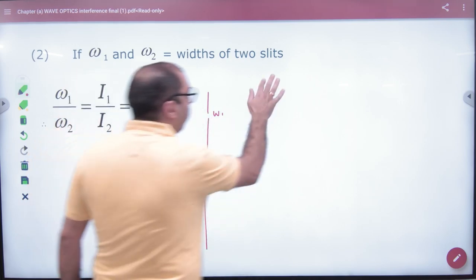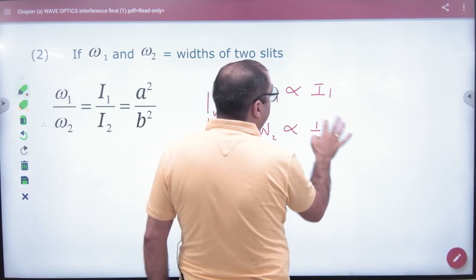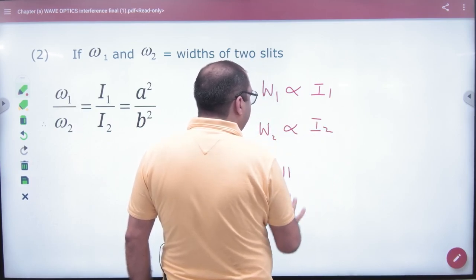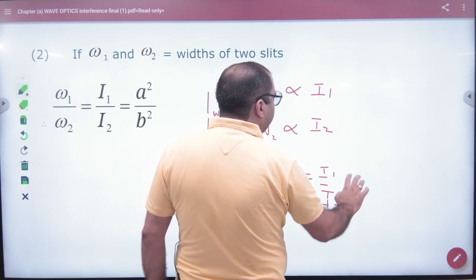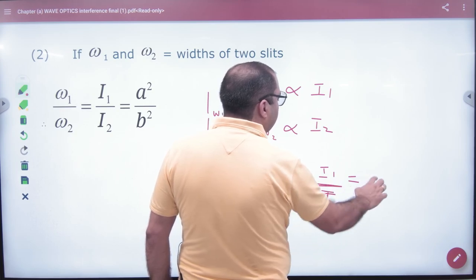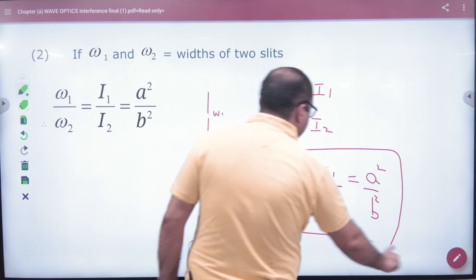So width is proportional to I1 and width is proportional to I2. Here, W1/W2 = I1/I2. We know intensity is directly proportional to amplitude squared, so this equals A²/B². We get the ratio.